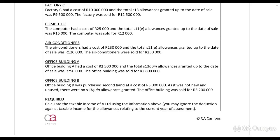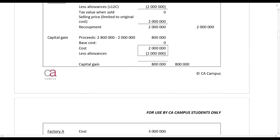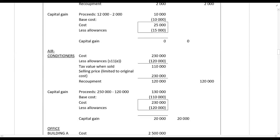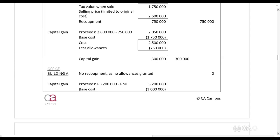Office Building B was purchased second-hand at a cost of three million rands. Because it was second-hand, you cannot claim section 13quin allowances, so there were no allowances in the past. Recoupment cannot be more than what you received in the past — if you got nothing, you can't have a recoupment. It was sold for 3.2 million rands. There is no recoupment, so the capital gain is simply: proceeds — the selling price — less a recoupment of nil, less the base cost which is the original cost.